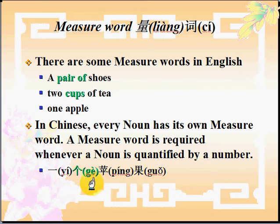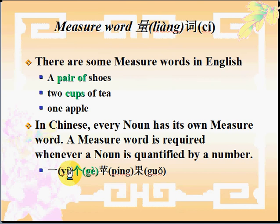We have to use the measure word following the number. So most of the time, different measure words are used to describe different nouns. And 个 is the most commonly used measure word. We will do lots of practice to help you get used to it.